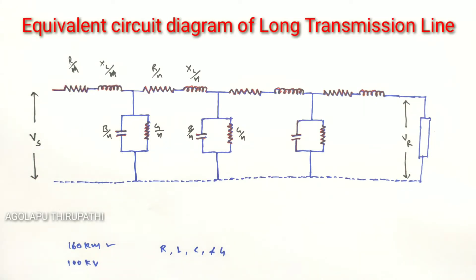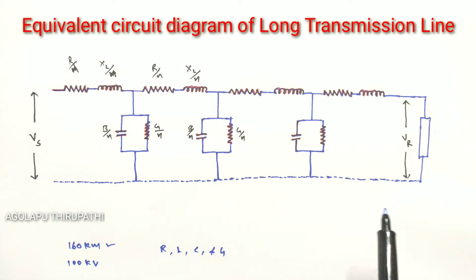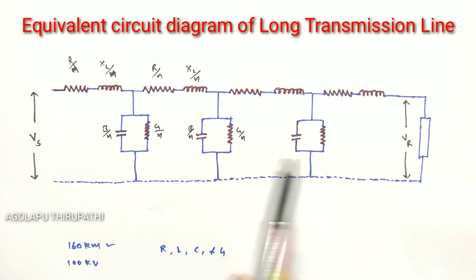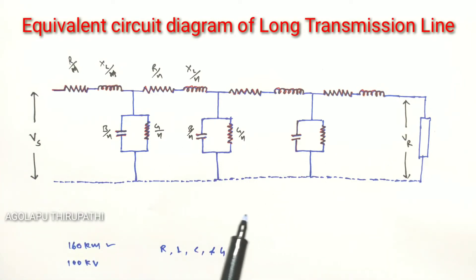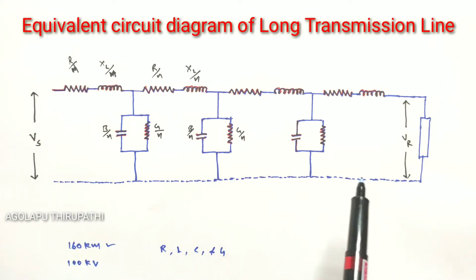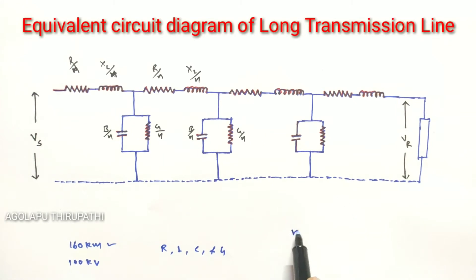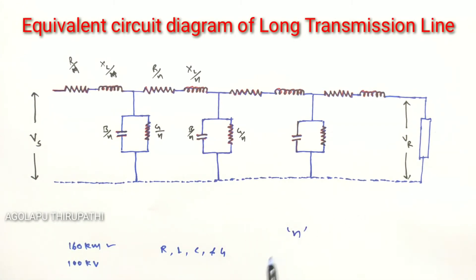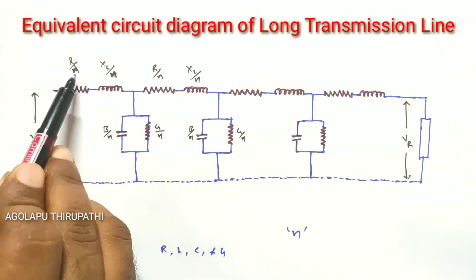Here you can see the equivalent circuit diagram of a long transmission line. In this, the line constants — resistance, inductance, capacitance, and conductance — are uniformly distributed throughout the entire length of the line. The total length of the transmission line is divided into n number of sections.